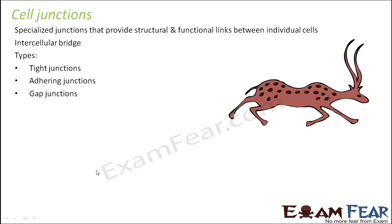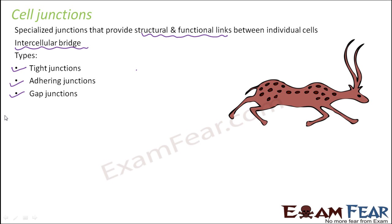Cell junctions are specialized junctions that provide structural and functional links between individual cells — basically an intercellular bridge. There are three types of cell junctions: tight junctions, adhering junctions, and gap junctions. We will talk about each one by one, starting with tight junctions.